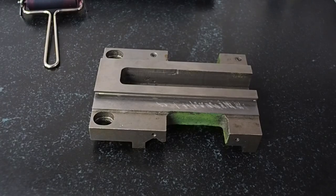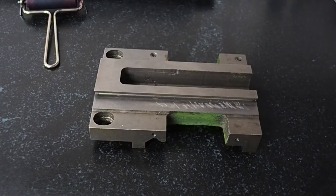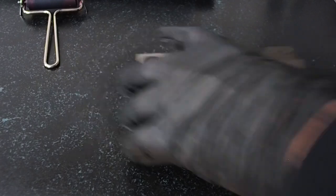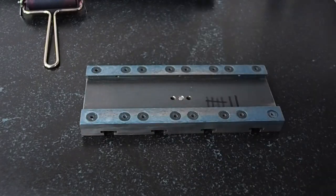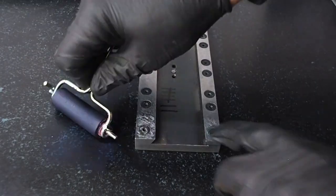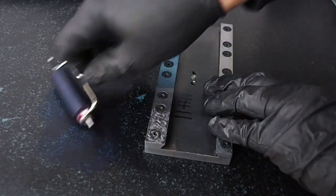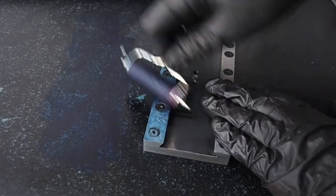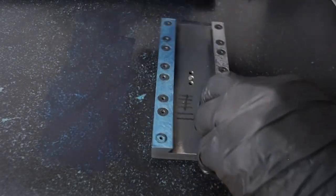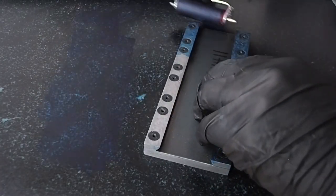Well let's get the show on the road. What we're going to do is scrape in the flat ways first. So for that I'm going to need to ink up the cross slide as a master. So we'll use a reasonably heavy layer of bluing to start with.